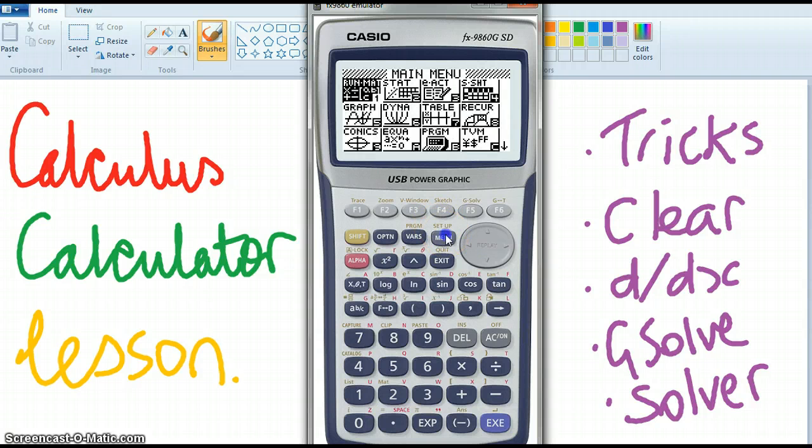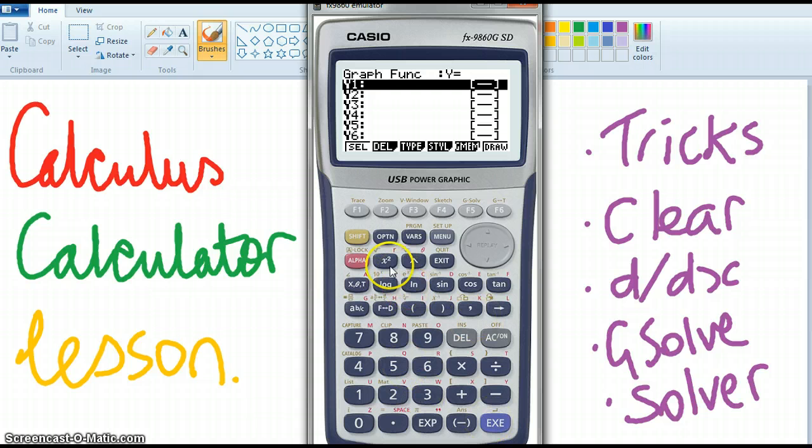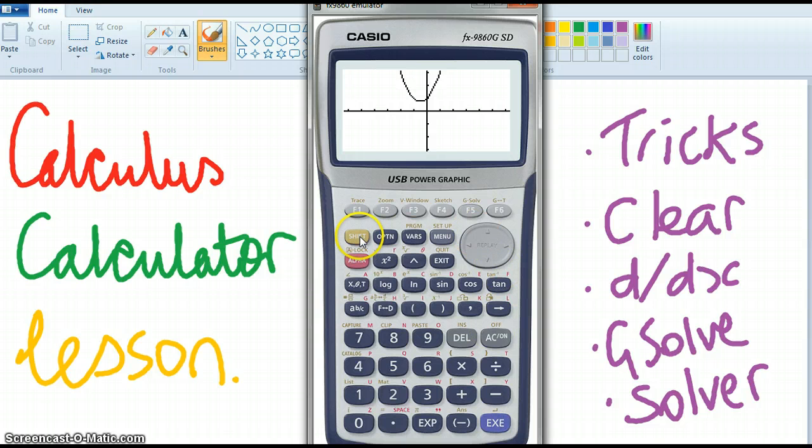Now I'm going to show you graphing so we go to our grapher. And for example if we went x squared, delete, delete, x squared plus x plus 1, what's that going to look like? Oh my screen's a bit sensitive, there we go, execute to draw. Now shift G solve is really good so you go shift and you go G solve, I can find my minimum. So what would the gradient at that point be? Zero.